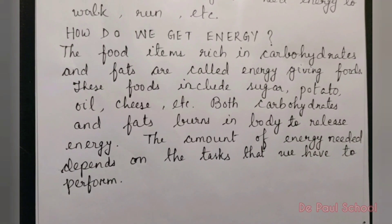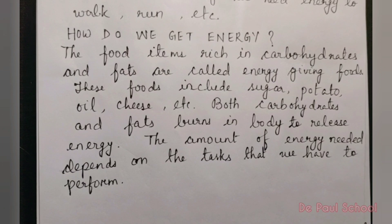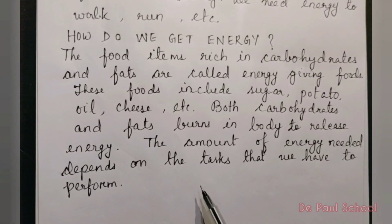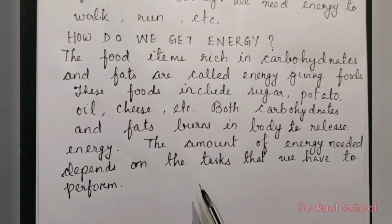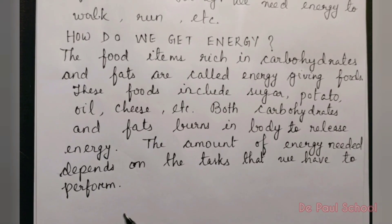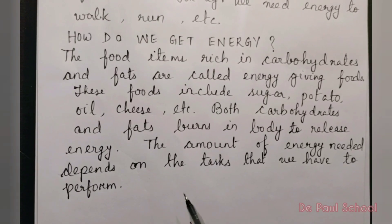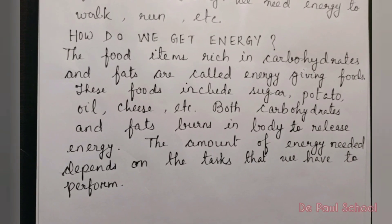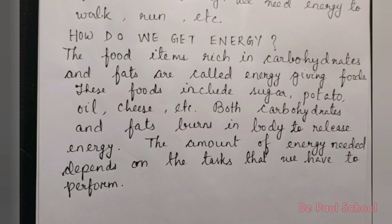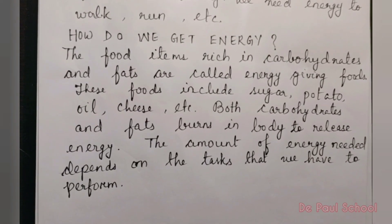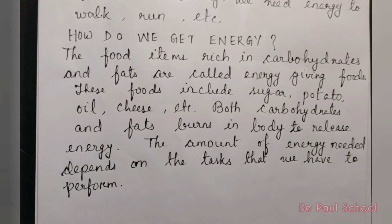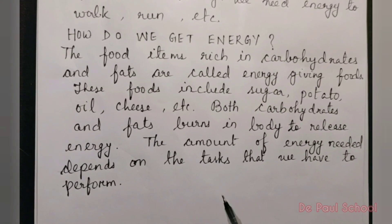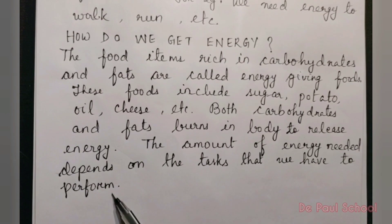Fats provide more energy than carbohydrates. The amount of energy required by our body depends on the task we are performing. For example, we need more energy when we run or jog than when we walk slowly. We also need more energy when we lift heavy luggage or climb a staircase. So the amount of energy always depends on the task we are supposed to perform.